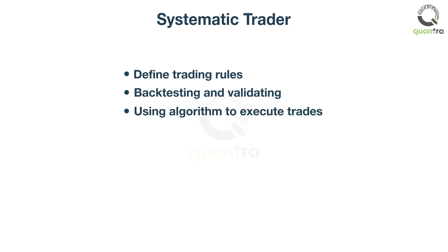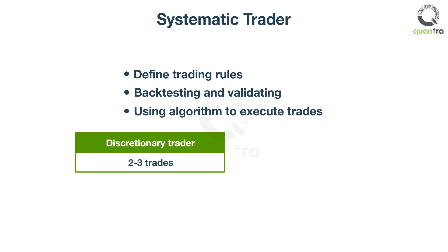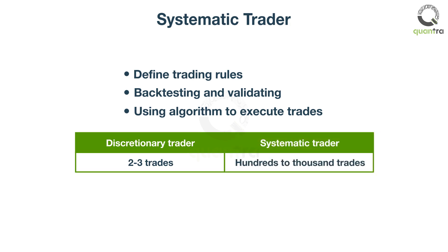Humans have limited time and brainpower. Thus, a discretionary trader is limited to trade in two to three securities. On the other hand, a systematic trader can scale his or her strategy to apply on hundreds to thousands of securities in different markets.